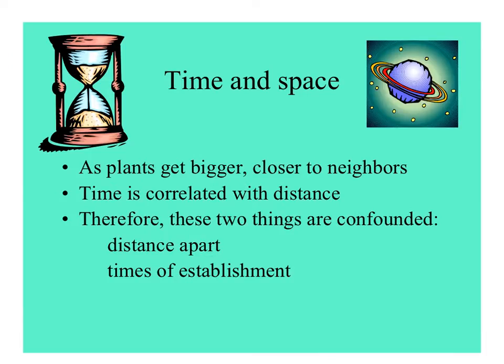Because there are other plants competing with others, that takes some of the pressure off the weaker plants. But it's a function of time: as plants rooted in one spot get bigger, they get closer to their neighbors. Time is inversely correlated with distance, so two things are confounded — the distance plants are apart and the time that they get established. A plant that grows earlier can get bigger faster.